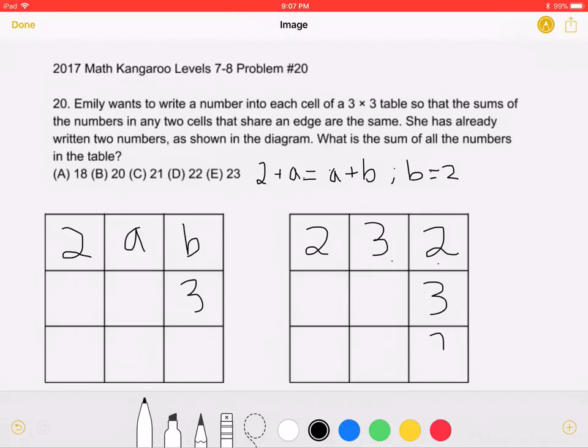Therefore, we must put a 3 here to get the sum of 2 plus 3. Then, we must put a 2 here, followed by a 3, 2, 3, 2.